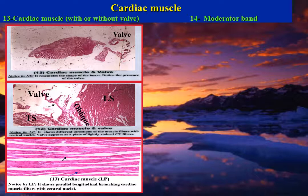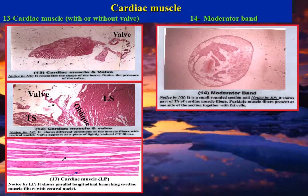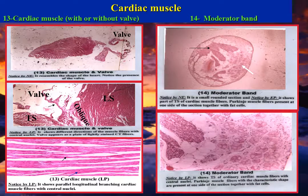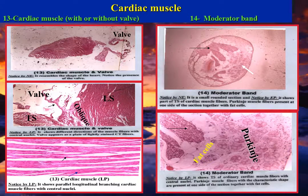By the naked eye, transverse section of the moderator band appears as a small rounded structure. By the eyepiece, it shows part of cardiac muscle fibers, darkly stained at one side, and lightly stained Purkinje muscle fibers at the other side. By low power, the moderator band shows TS of cardiac muscle fibers with central nuclei at one side, and lightly stained Purkinje muscle fibers together with fat cells at the other side.